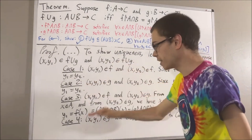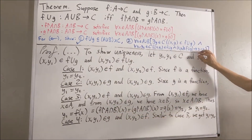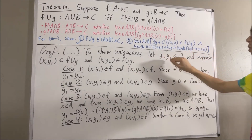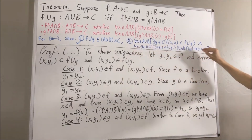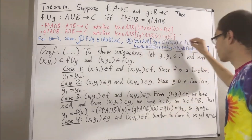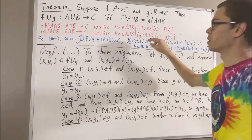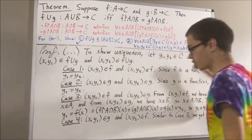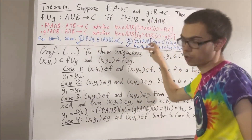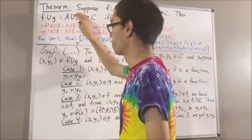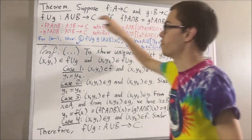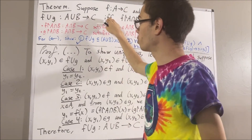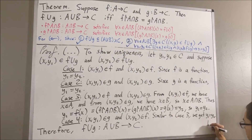In all four cases, y1 equals y2, so we have proven uniqueness. We have proven both existence and uniqueness for an arbitrary x in A∪B, so we've proven condition two. With both conditions one and two proven, the union of f and g is a function from A∪B to C. We have proven both directions of the if and only if, so the entire theorem is proven. That completes the proof.